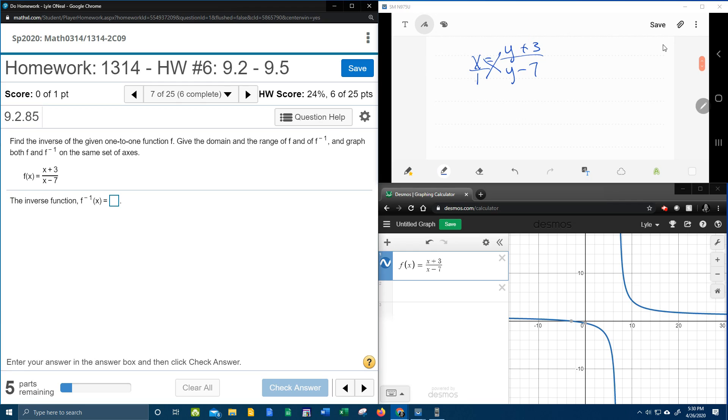Because that turns this into a proportion, I can cross multiply. So we're going to have x times y minus 7 equals 1 times anything is itself, so 1 times y plus 3 is just y plus 3.